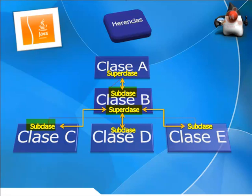A través de la jerarquía de clases, una clase hereda de su superclase, que a su vez hereda de la suya, y así sucesivamente. En este ejemplo, la subclase D tiene una única superclase que es la clase B, pero va a heredar de B y de la superclase de B, que es la clase A. Por lo tanto, D heredará tanto de B como de A, ya que todos los métodos y atributos que tenga A pertenecen también a B y por tanto a las subclases de B.